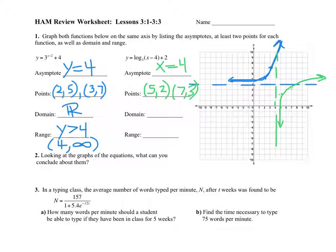Now let's go ahead and find the domain and range. So the domain of this graph is going to be x is greater than 4. Or you could say 4 to infinity. And then the range would be all real numbers. Okay. Now, looking at the graphs and all the stuff up here, what can you conclude about them?